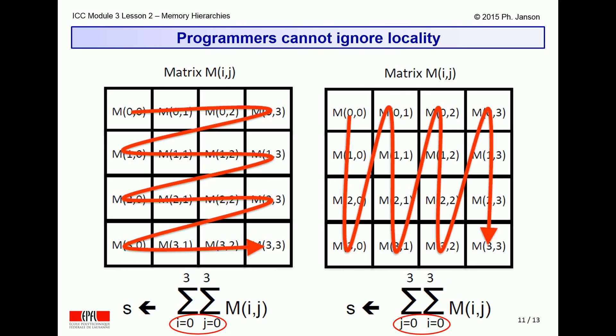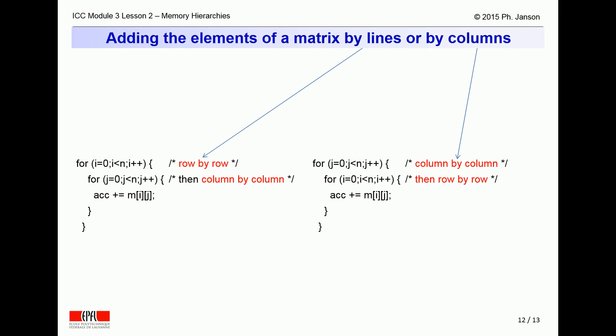The existence of cache memories and their behavior cannot and should not be ignored by programmers, though. Consider, for example, a program that would add all the elements of a matrix. A programmer could imagine doing so row by row as on the left side of this picture. Alternatively, she could imagine doing so column by column as on the right side of this picture.